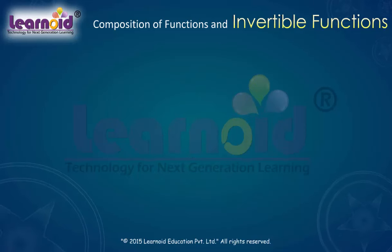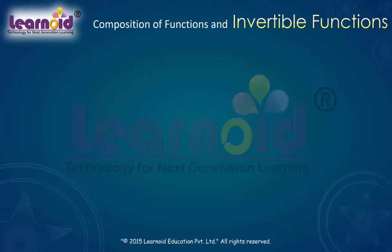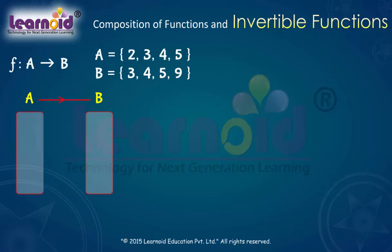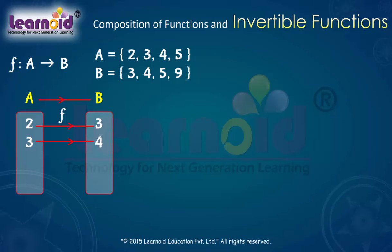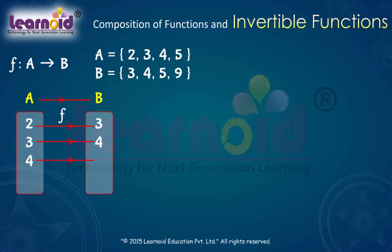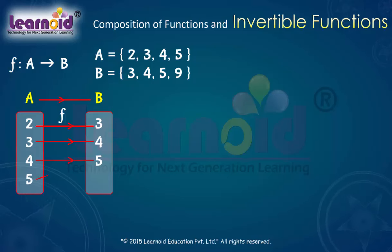Let us understand through an example. Let f be a function from A to B such that f(2) = 3, f(3) = 4, f(4) = 5, and f(5) = 5.